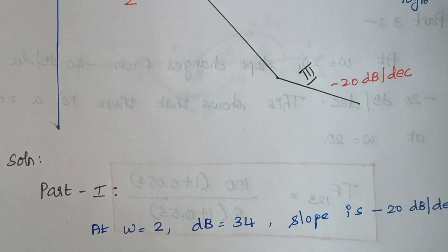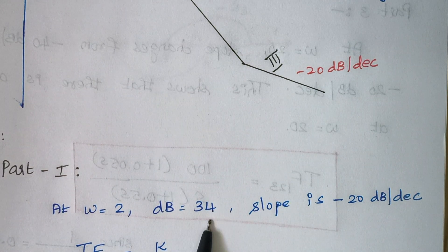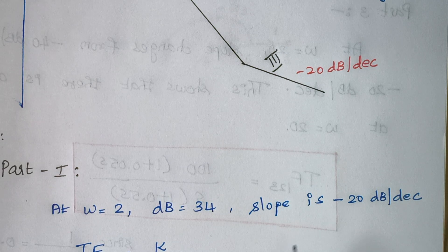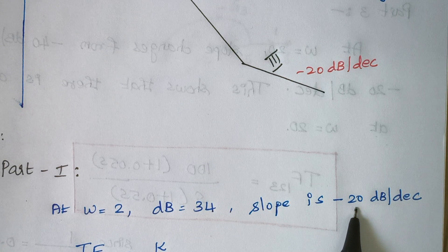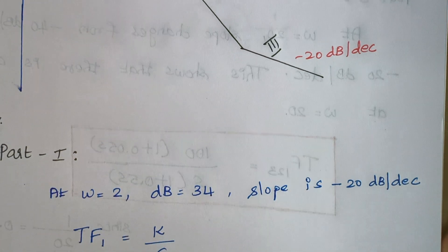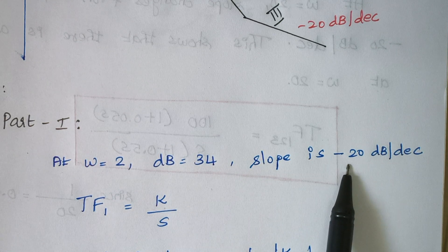In step 1, just write the things you observe from the picture. At omega equal to 2, the magnitude is 34 dB and the slope is minus 20 dB per decade. As we already know, the initial slope is given by the constant along with individual S terms. The slope is minus 20, so the S term will be in the denominator since we have a negative sign. The transfer function for part 1 is simply written as K divided by S.